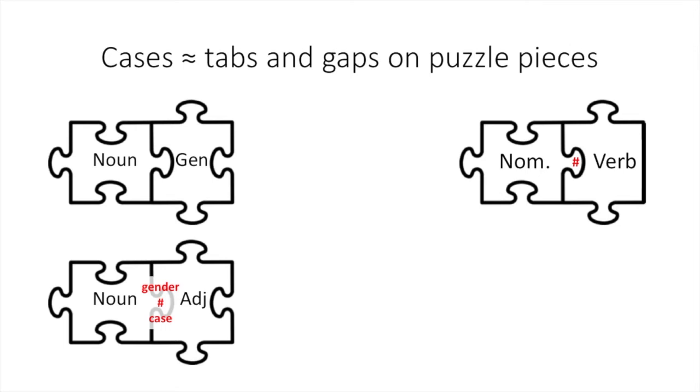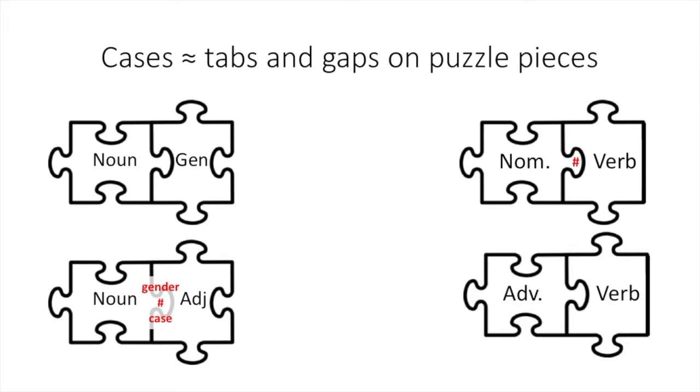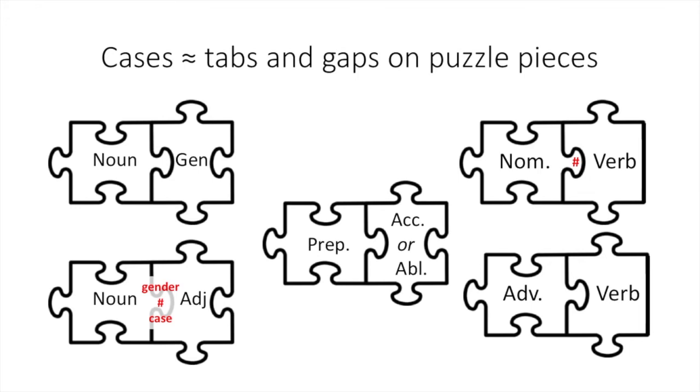Remember, an adjective modifies a noun only if they agree in gender, number, and case. An adverb may modify an adjective or a verb, but it tends to come before the word that it modifies. Finally, a preposition will almost always come before the ablative or accusative noun that is the object of the preposition. Use these patterns to guide your thoughts as you link the word puzzle pieces together in your translation.